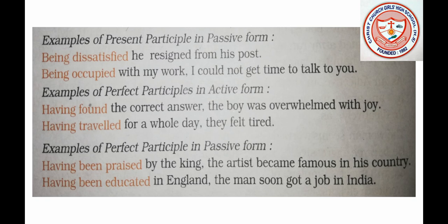Next we have examples of perfect participle in passive form: 'Having been praised by the king, the artist became famous in his country.' 'Having been educated in England, the man soon got a job in India.' So 'having been praised' and 'having been educated' are examples of perfect participle in the passive form.